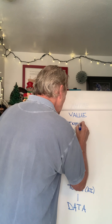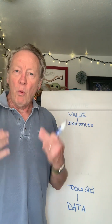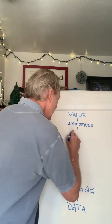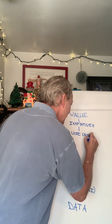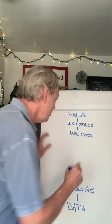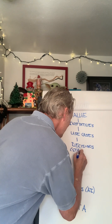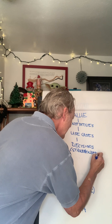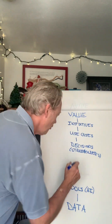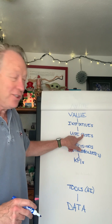What we want to do is understand what organizations' business or operational initiatives are. From that, we want to decompose those initiatives into use cases — things they need to accomplish over a set period of time to deliver value. Then we need to decompose those use cases into the decisions our stakeholders need to make in support of those use cases. And then define the KPIs and metrics against which stakeholders are going to measure the effectiveness of their decisions.